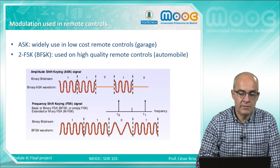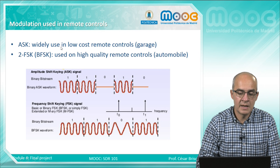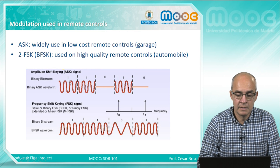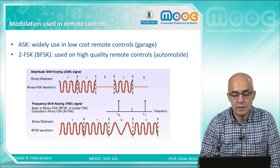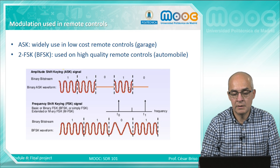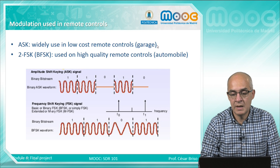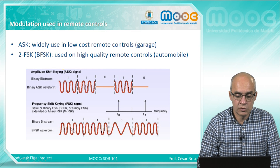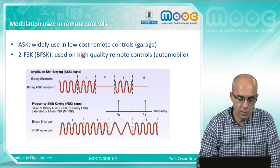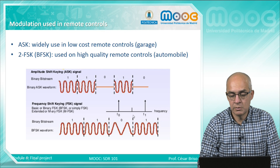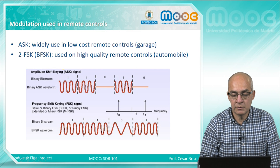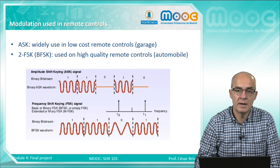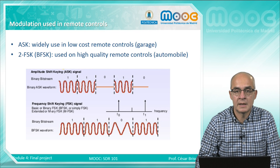Let's first review ASK and FSK. On ASK remote controls, signals are transmitted with different amplitudes — the 1 is a signal and the 0 is no signal. This type of control is mainly used for garage and low-cost remote controls. With FSK, one frequency is used for the 1 and another frequency for the 0, giving a dual-peak spectrum. This type is more expensive but has more range and higher quality, and is widely used for cars.